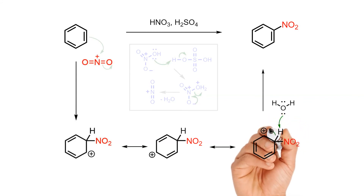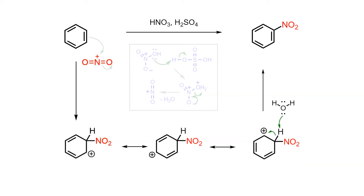If a molecule of water from the solvent acts as a base, a proton is removed, and a pair of electrons is delivered back into the pi system to reform the stable aromatic sextet.